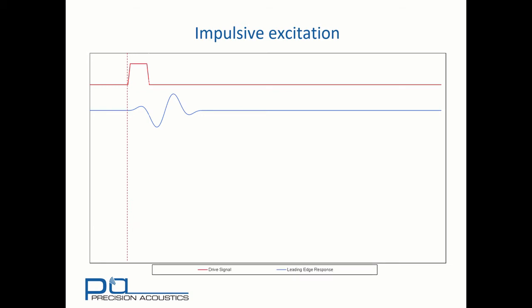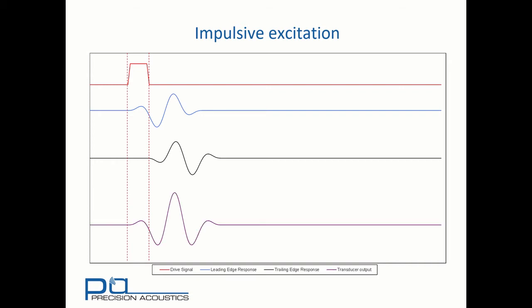Now we'll consider a square pulse. We have a copy of the transducer's impulse response from the leading edge, and a time-delayed version from the trailing edge. Notice here that because the trailing edge of the drive signal is negative going, we have a phase inverted version of the transducer's impulse response. And the transducer output is the combination of the two.